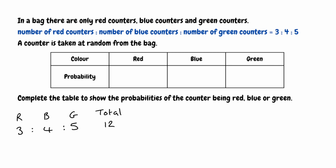So now we can find our three different probabilities all as fractions. For the probability of the counter being red, all I'm going to do is take the parts for red and put that over the total amount of parts. For red, we know we've got three parts, and that's out of a total of 12 possible parts. So our fraction here would be 3 twelfths. But we can simplify this fraction — we can divide the numerator and denominator both by three, and that gives us one quarter.